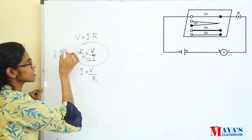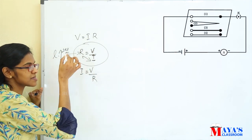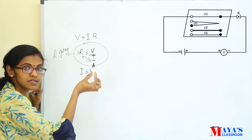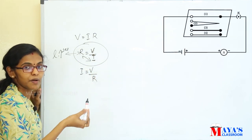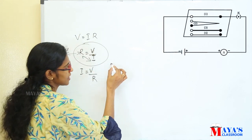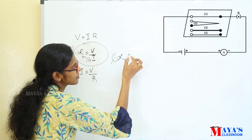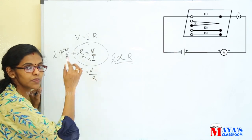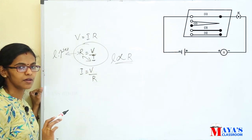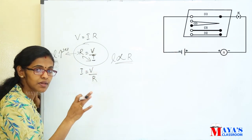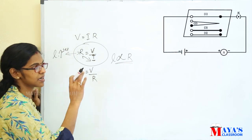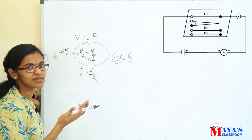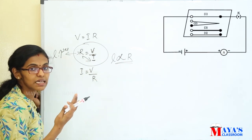Length increases, then resistance is higher. Therefore, length and resistance are directly proportional. In the third case, same length and same material but the thickness is greater. At that time, the current in the circuit increases.